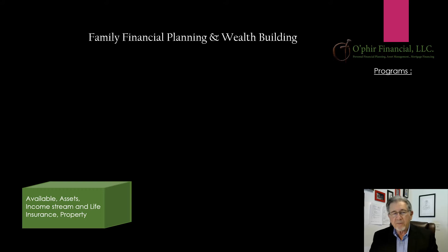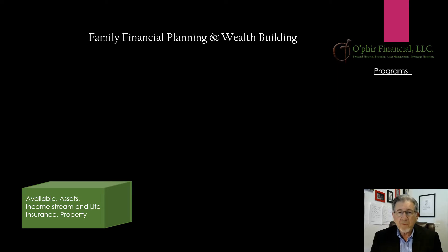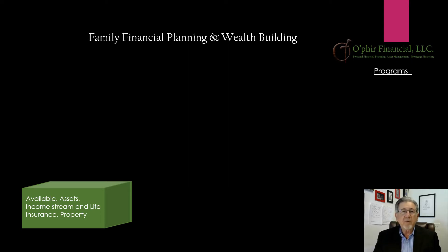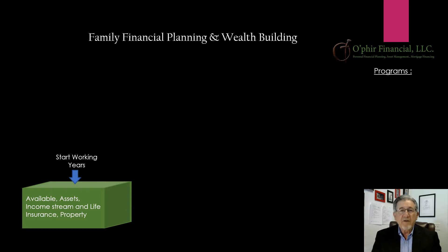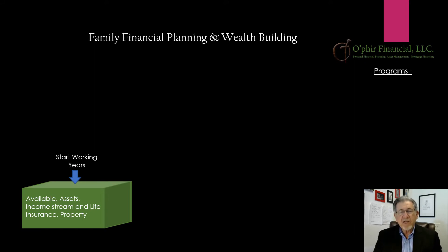As you can see in the presentation down in the bottom in the green block, we have a couple of things listed there: assets, income stream, life insurance, and property. In this block, we're trying to represent the things that you may, from the start of your working years to the end of your working years, invest in or put your money into. That develops value, and the objective is to start measuring all the way up to the end of your working years. That line shown in yellow is a line of increase.